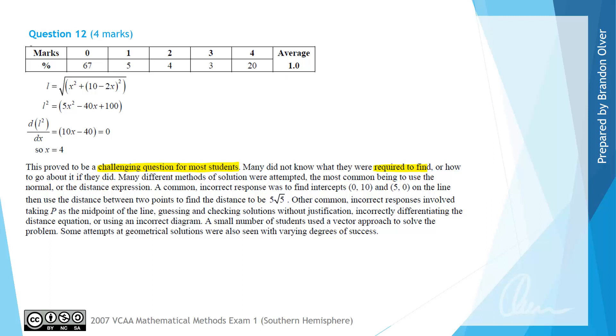Many different methods of solution were attempted. The most common being the normal to the line, so the other thing we can remember is the minimum distance between the line and a point will intersect at a 90 degree angle, or be perpendicular. Or as we used it, the distance expression.